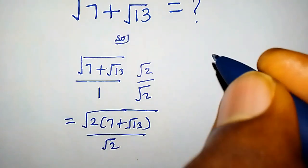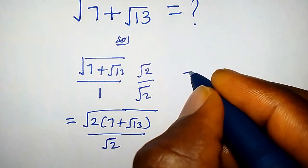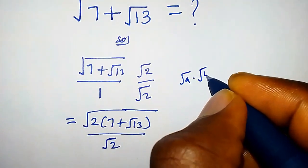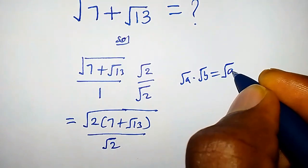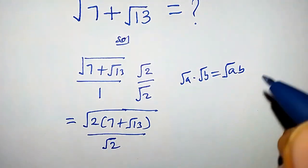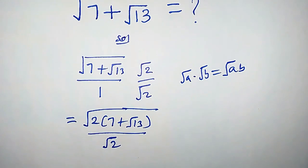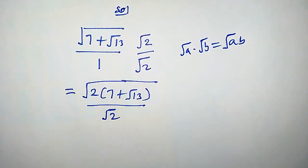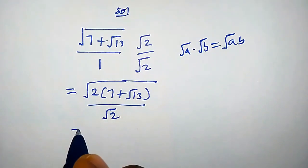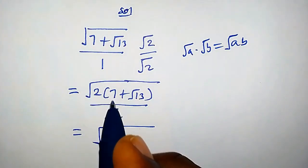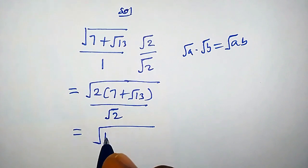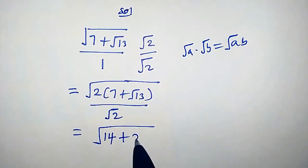Whenever we have √a times √b, this is the same thing as writing √(ab). Using that rule, this equals √(2×7) which is √14, plus √(2×13) which gives us 2√13, all over √2.